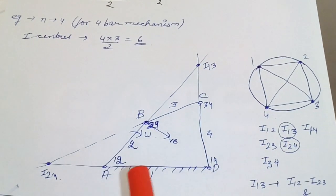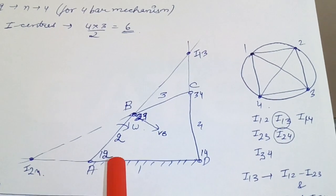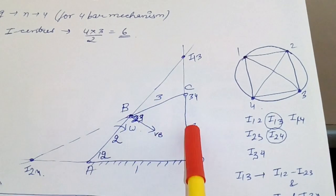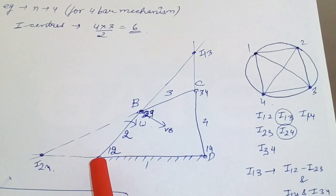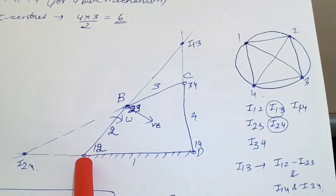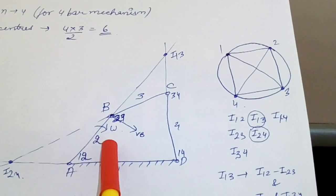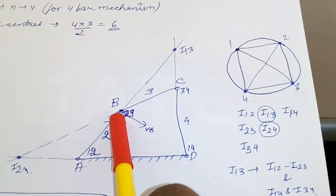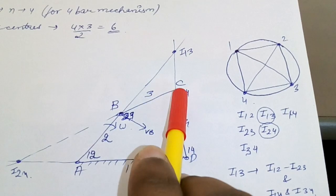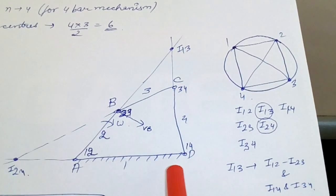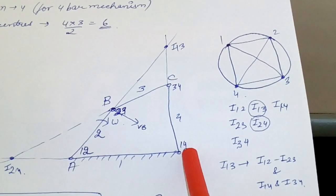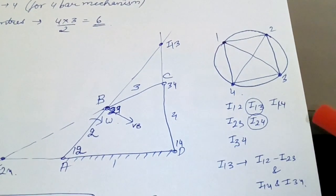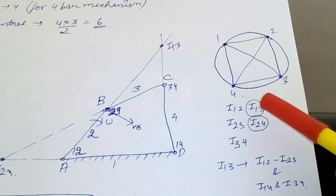I-centers are the intersection points of the corresponding links on the configuration diagram. I12 is the pin at point A (intersection of links 1 and 2), I23 is point B, I34 is point C, and I14 is point D. That gives us four I-centers directly. The two remaining ones are I13 and I24.